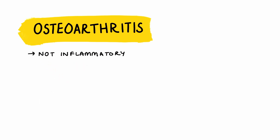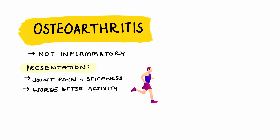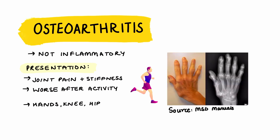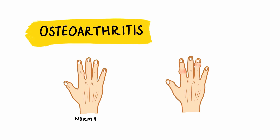Similar to rheumatoid arthritis, osteoarthritis can also present with joint pain and stiffness. A good exam technique to remember is that for rheumatoid arthritis it's worse after rest and symptoms can improve with activity, whereas for a mechanical pathology like osteoarthritis it's worse with activity and improves with rest. The joints affected are also slightly different — patients will have pathology in their hands, knees, and hip joint. In particular, with the hands you can see Heberden's and Bouchard's nodes. Here we have a normal hand, and comparing it to osteoarthritis-affected hands we can see a difference as there are swellings present on the fingers.